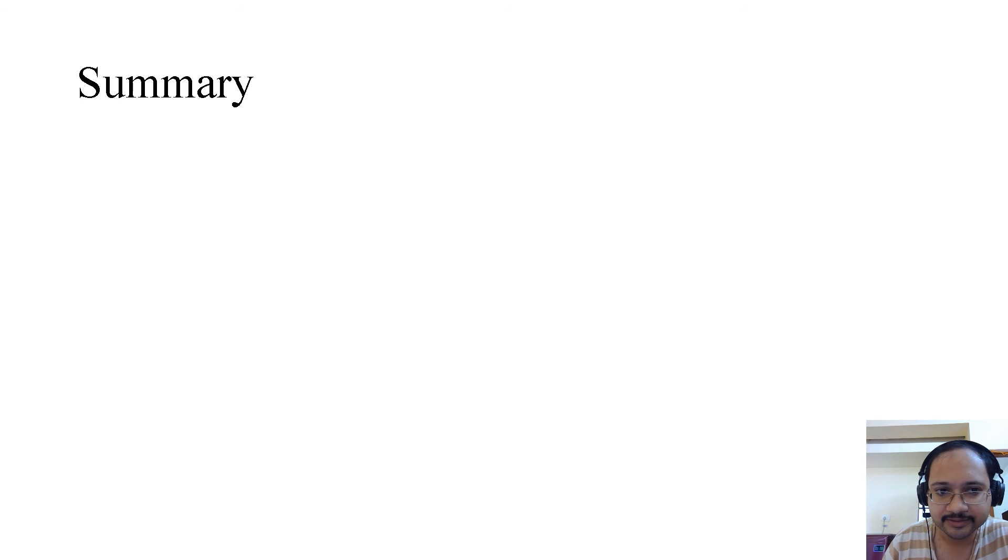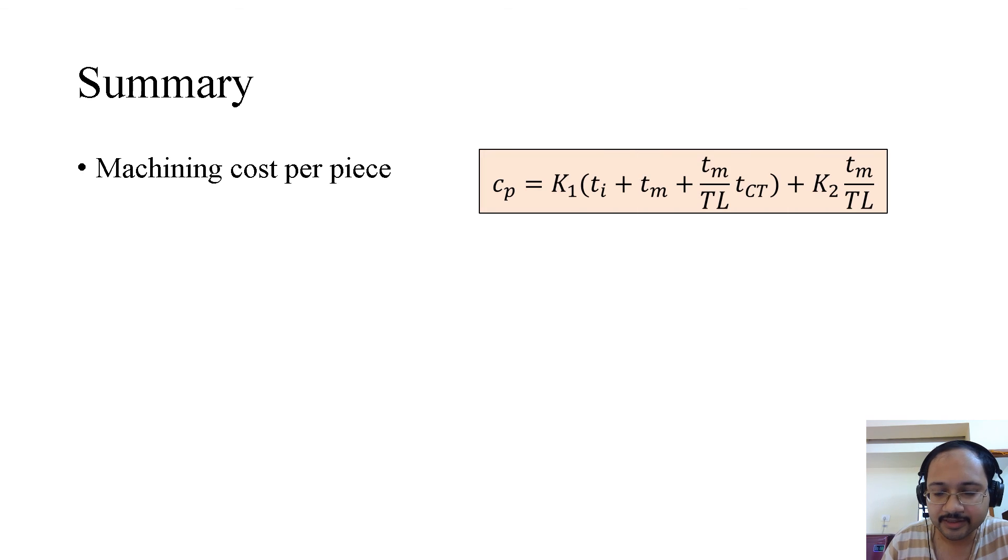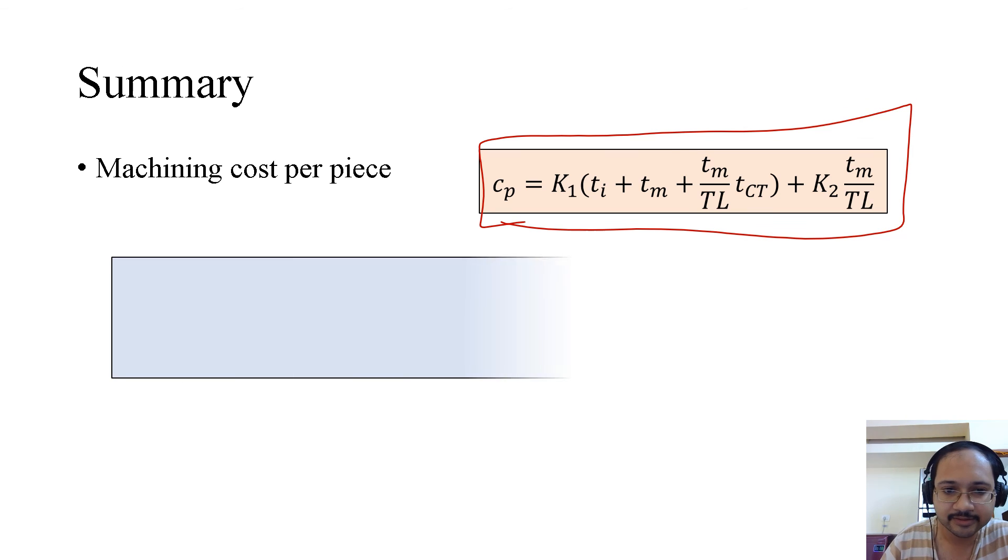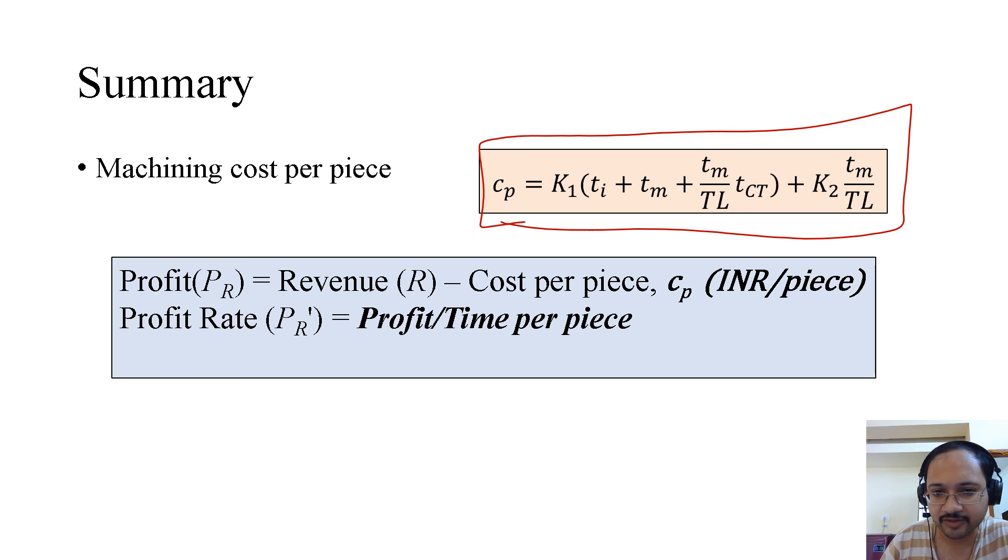So to summarize, this is the machining cost we just explained. This is the profit, which is the revenue minus cost per piece, and then the profit, if we divide it by time per piece, we get the profit rate. So we are actually interested in these two.